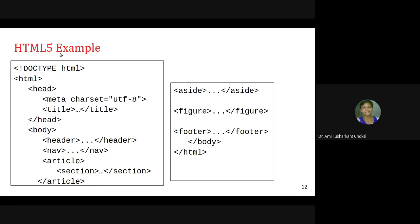Let's see how these tags are used in an HTML5 example. We start with DOCTYPE HTML, then HTML tag, head tag — it is always preferred to have head in an HTML document — meta tag containing character set, and title tag for the page title.